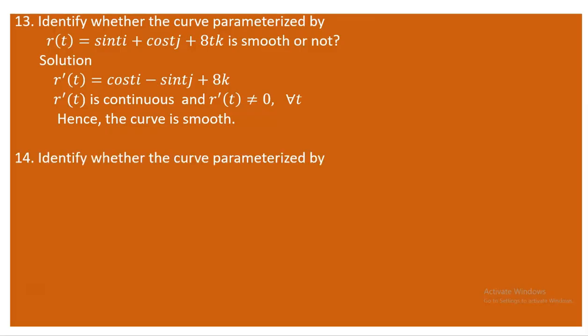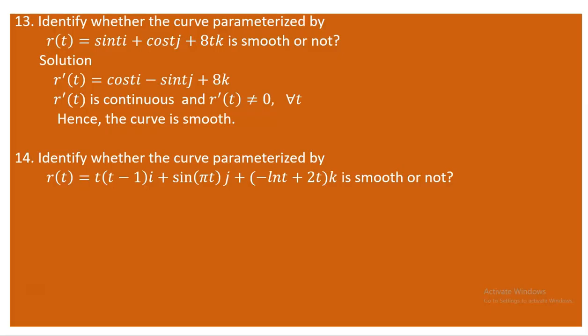Proceeding to question number 14: identify whether the given curve is smooth or not. As before, we need to carry out the derivative of the parameterizing vector and check whether there is any possibility of the derivative being zero.